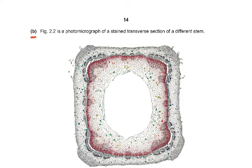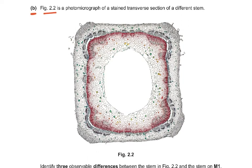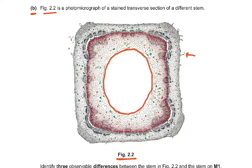Coming to part B of the question: figure 2.2 is a photomicrograph of a stained transverse section of a different stem. Look at it very carefully — it would come to you as a colored picture. This is a square stem. It has trichomes on the outside — you can see these trichomes — and it has a central hollow area.